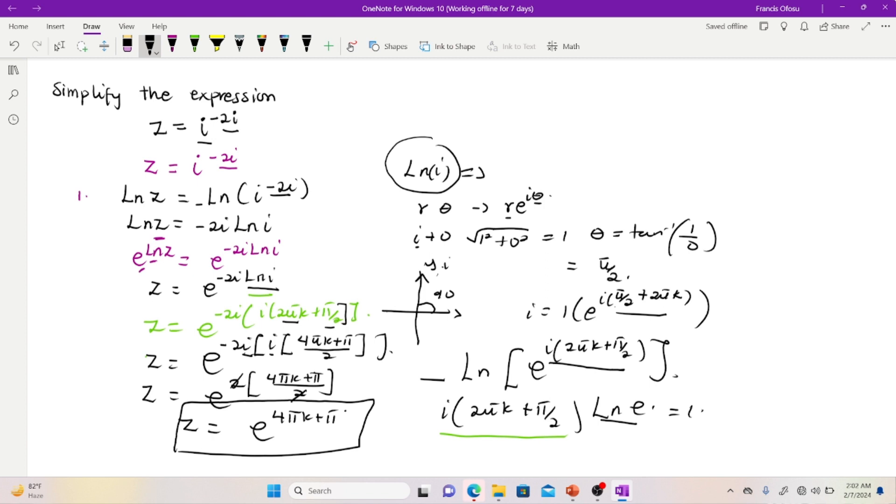After simplifying, z is equal to i to the power negative 2i. This is the end of this tutorial. Hope to see you in the next tutorial, we'll be solving more problems in logarithm of complex numbers. See you.